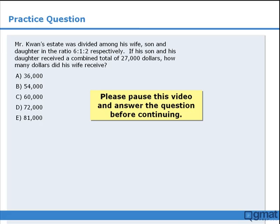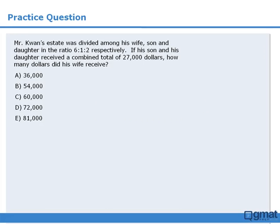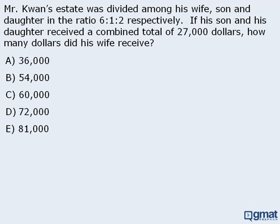Please pause this video and answer the question before continuing. In this question, we want to determine the inheritance that Mr. Kwon's wife received. We will solve this question using two different approaches. For the first approach, let's begin with the fact that the money was divided in a ratio of 6 to 1 to 2.